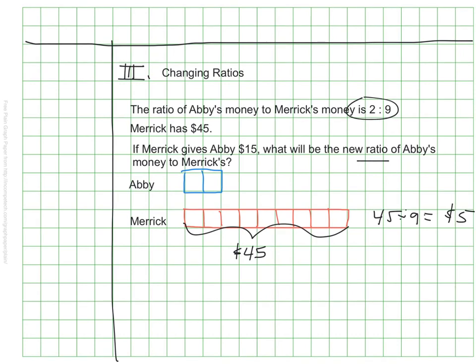Now, the problem tells us that Merrick is giving Abby $15. In my tape diagram, if each rectangle or each square is $5, that means that Merrick is giving up $5, $10, $15, three squares, and giving them to Abby. So we can add that here. One, two, three squares are moving from Merrick to Abby. That's a little messy. Sorry, guys. My pen's a little off.